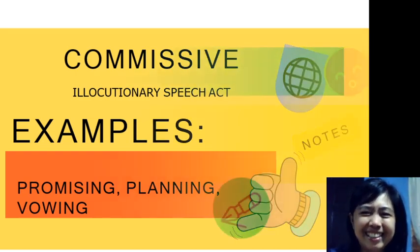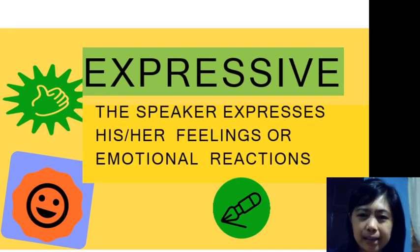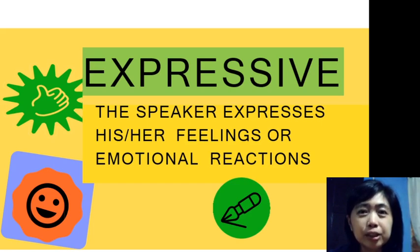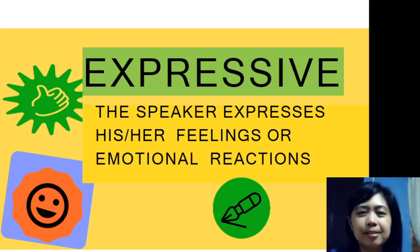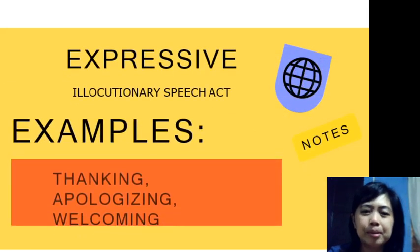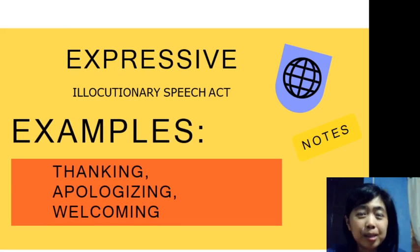Next type of illocutionary act is expressive. Expressive is an illocutionary speech act in which the speaker expresses his or her feelings or emotional reactions. Remember emotional reactions from the functions of communication — our topics are interrelated. Examples include thanking, apologizing, and welcoming.